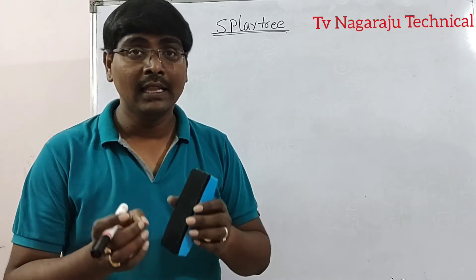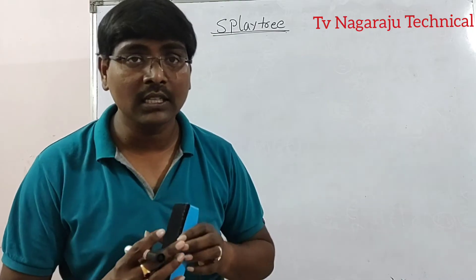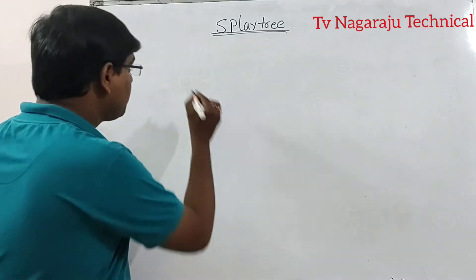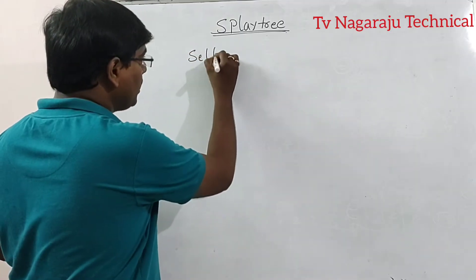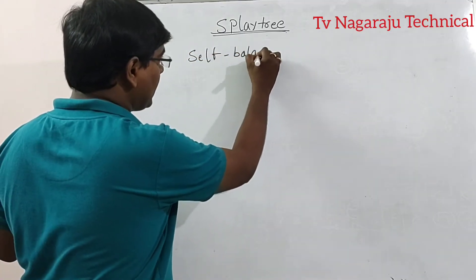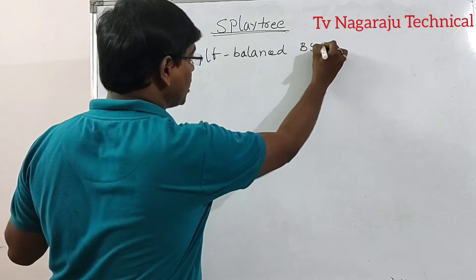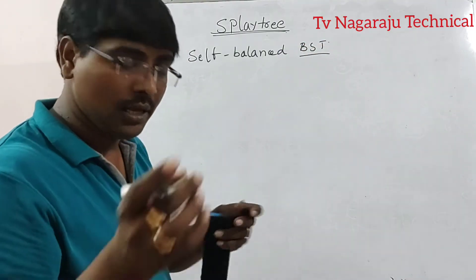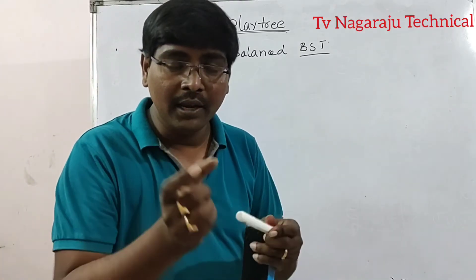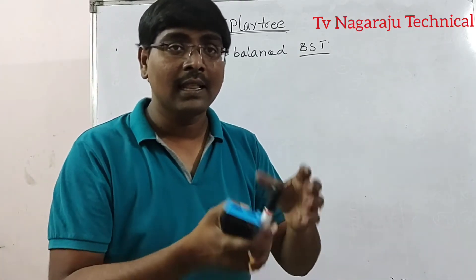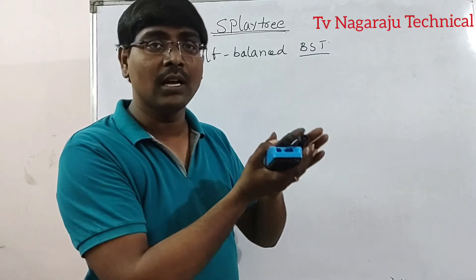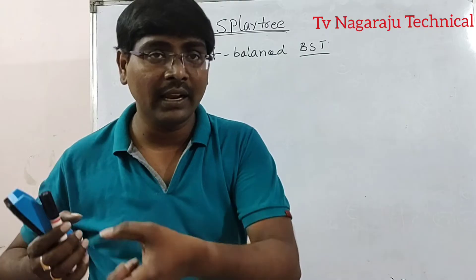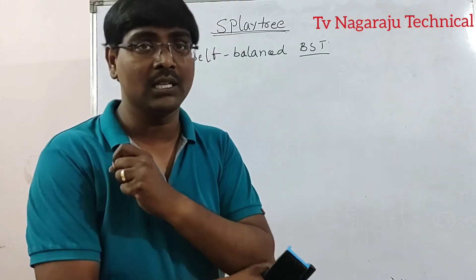Welcome to our channel. In this session, we are going to discuss about Splay Tree. What is a Splay Tree? A Splay Tree is simply a self-balanced binary search tree. A binary tree such that elements less than a node are placed on the left side and elements greater than the node are placed on the right side — that is called a binary search tree.